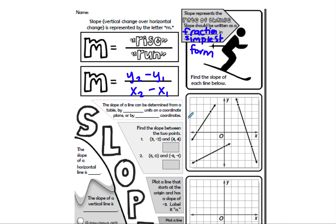Let's find the slope of each line. The graph has no numbers besides zero, so we infer it goes by ones and can count rise and run. First line: we go up three and over two, so slope is three-over-two. Do not write it as one and a half — slope needs to show the rise part and the run part separately. No mixed numbers, no decimals unless it's a story problem.